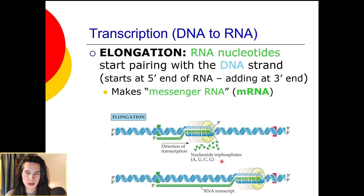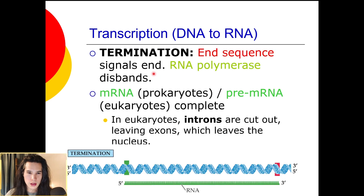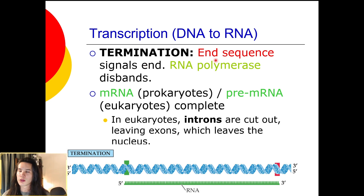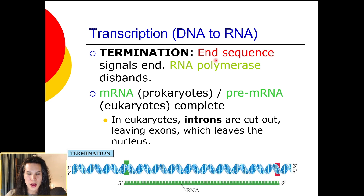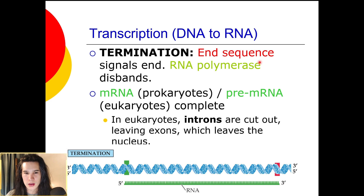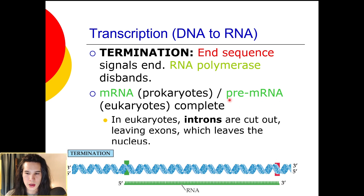That's elongation — the second step of transcription. Next we have termination. Your RNA polymerase is going to reach an end sequence. Each gene has a beginning and an end — RNA polymerase binds to the promoter sequence and transcribes all the way until it meets the end sequence. This end sequence signals for your RNA polymerase to disband from the DNA, and what we're left with is a strand of mRNA — in eukaryotes we would call this pre-mRNA.